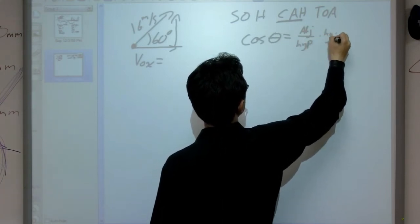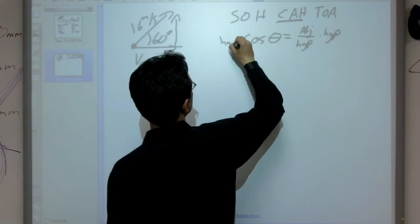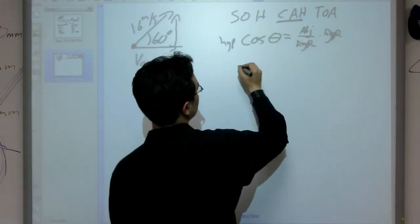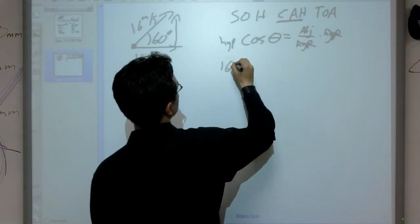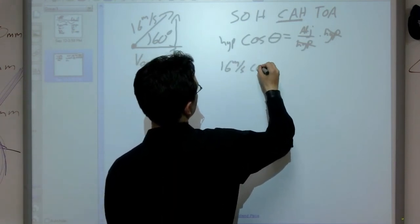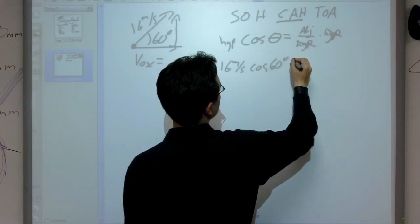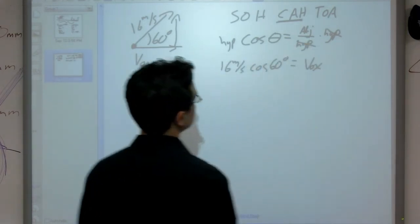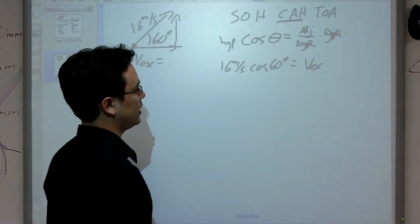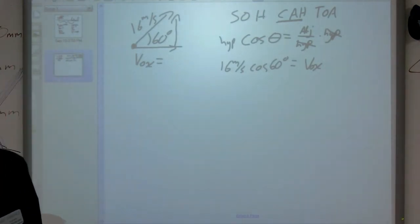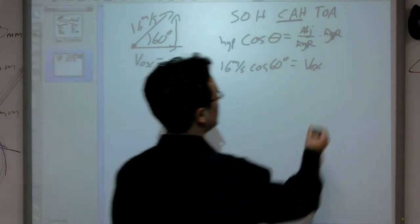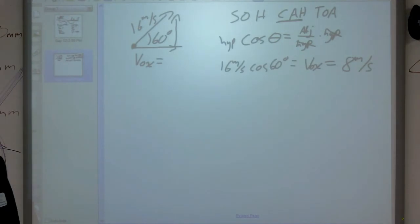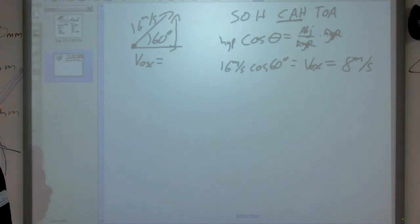So, CAH is cosine of theta equals adjacent over hypotenuse. I'm going to multiply both sides by the hypotenuse. And my adjacent side is my v0x. So I find out that my hypotenuse, 16 meters per second, times cosine of my angle, which is 60 degrees, equals my adjacent, which is v0x. I can evaluate that. When I solve for that, I find out that my x velocity initially is 8 meters per second.